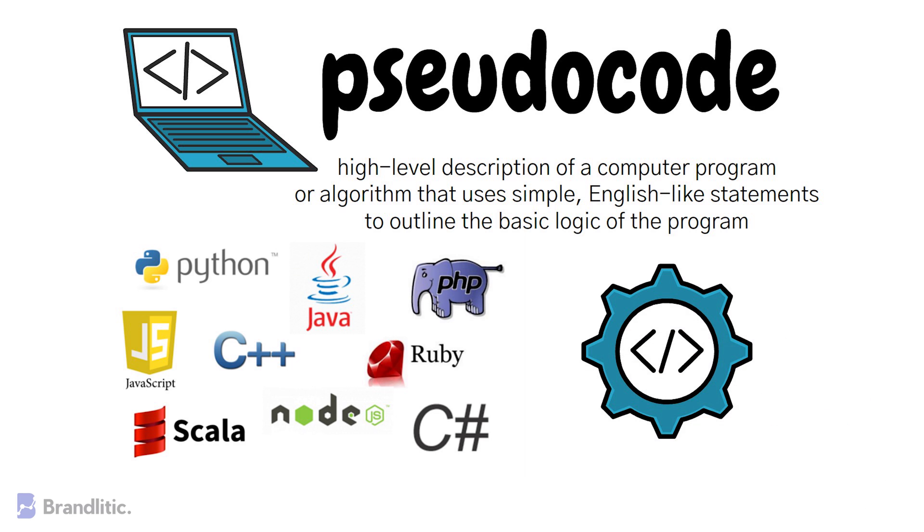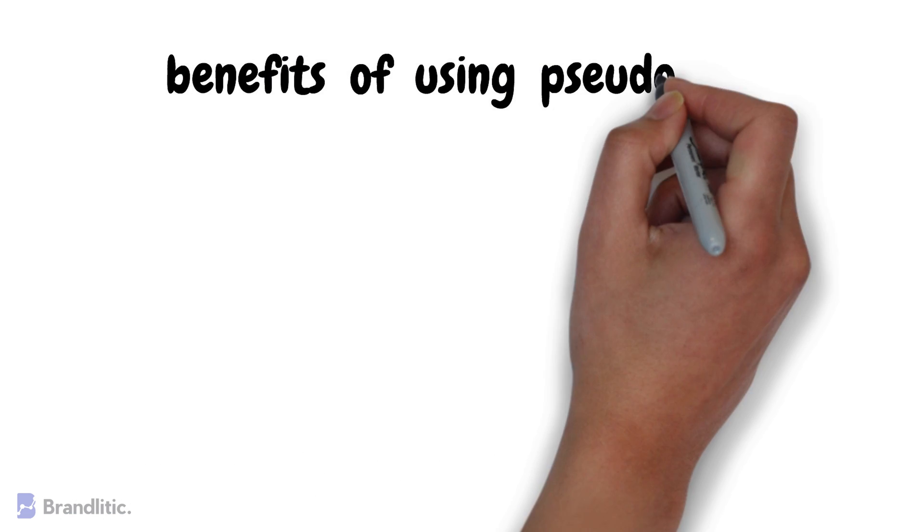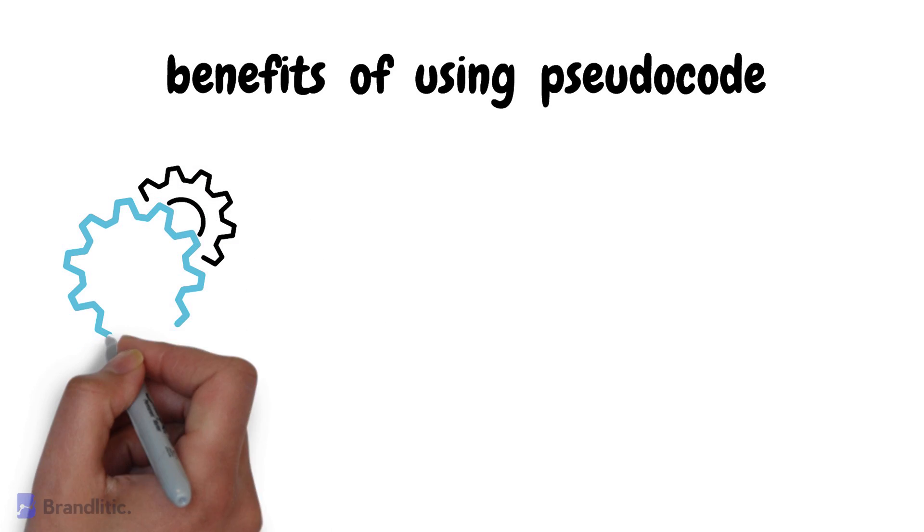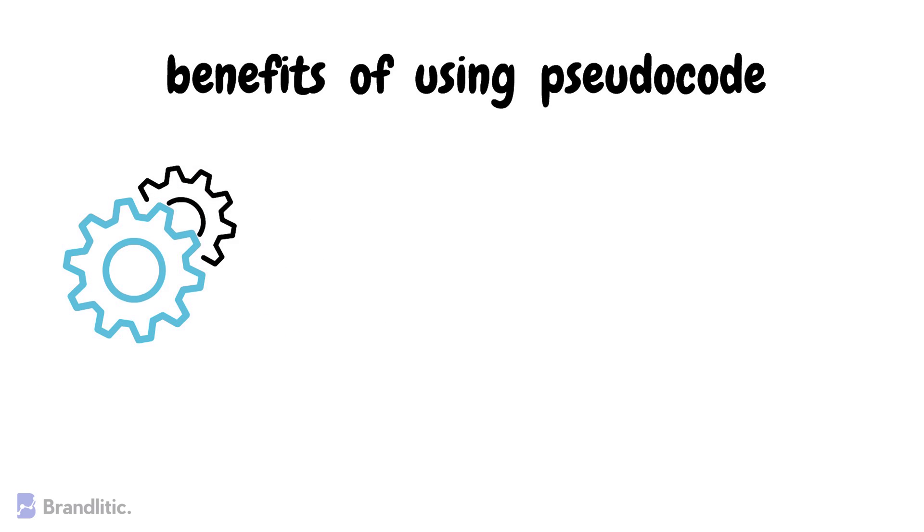But you must be thinking, why use pseudocode? Well, to be honest, there are several benefits of using pseudocode. First of all, pseudocode allows programmers to think through the logic of their program before they start coding. By breaking down the problem into smaller steps, they can identify potential issues and ensure that the program will work as intended.